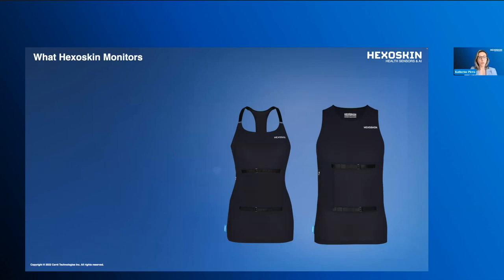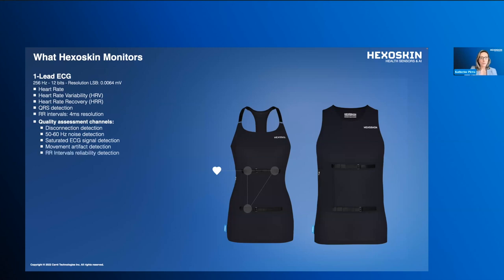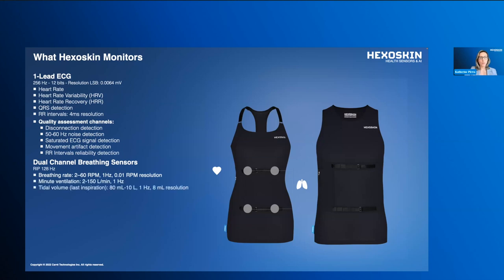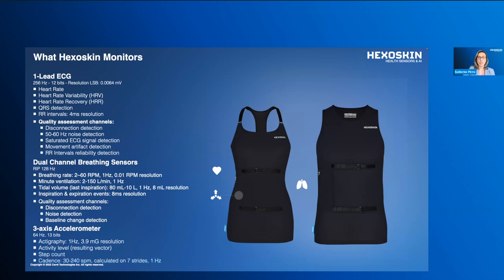Hexoskin is a very precise tool to monitor cardiac, respiratory, and activity data continuously. The shirt has a one-lead ECG collected through three embedded textile dry electrodes, providing data on heart rate, heart rate variability, and the QRS complex. We also have two embedded integrated respiratory inductance plethysmography sensors around the thorax and abdomen, which report on breathing rate, minute ventilation, tidal volume, and inspiration and expiration events. Finally, we have a three-axis accelerometer housed within the smart device, collecting data on actigraphy, activity levels, and step count.